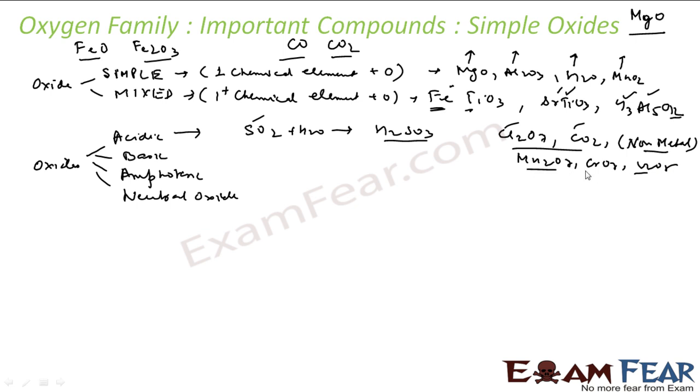We talk about basic oxide. Basic oxide is the oxide which gives base with water. Acidic oxide gives acid with water. Basic oxide gives base with water. These will be typically metal oxides, for example Na2O or calcium oxide.